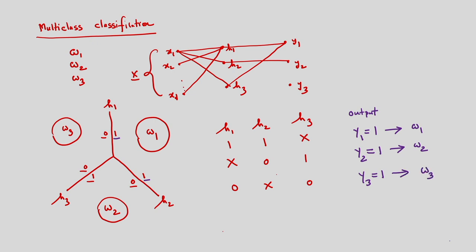You can see the importance of the hidden neurons. Hidden neurons h1, h2, h3 are considered, and based on their values I can get the outputs y1, y2, y3. From this explanation you can understand the importance of the hidden layer. This is the multi-class classification problem with three classes omega 1, omega 2, and omega 3.